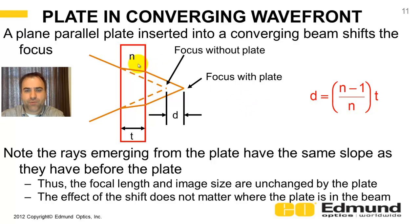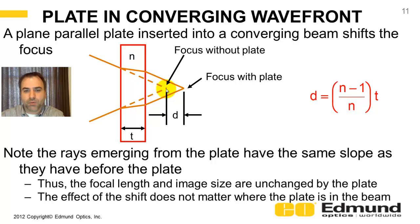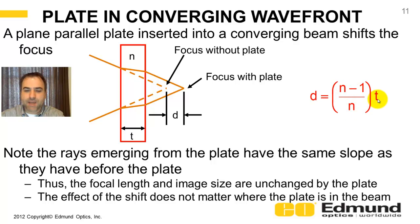Let's put a window — a plane parallel plate — in a converging wavefront. It does not change any of the first-order properties of the beam; it simply moves where the image is placed along the optical axis. The dotted rays show where the image would form without the window; with the window in place, the image shifts aft by some distance D. This shift D equals N minus one, divided by N, times the thickness of the plate.